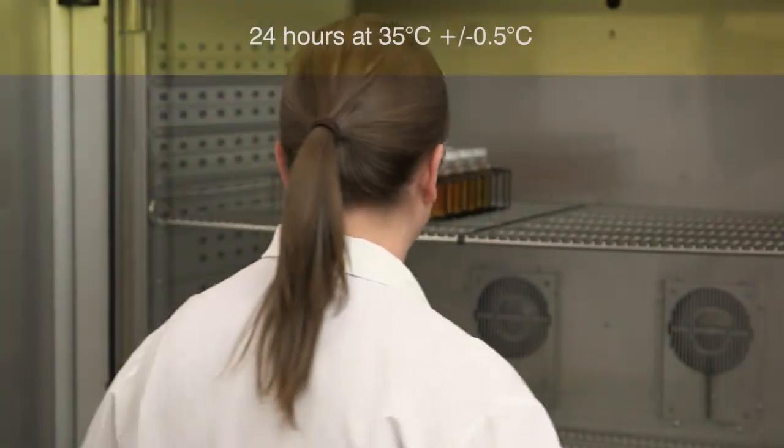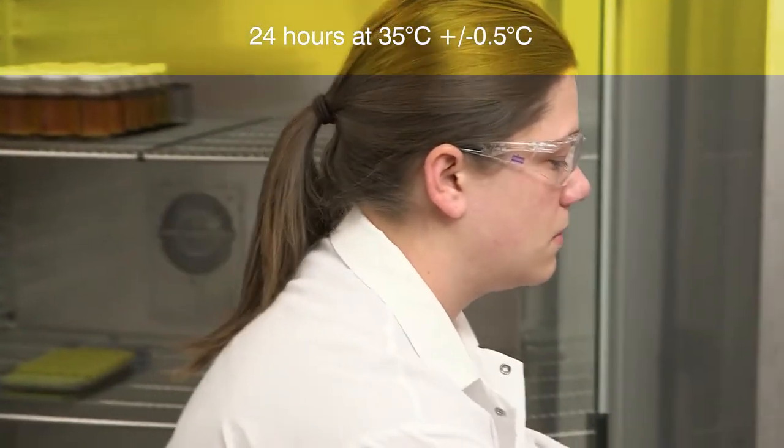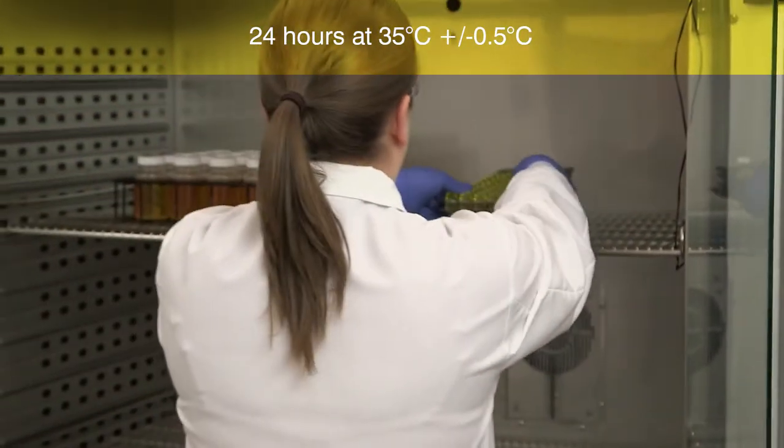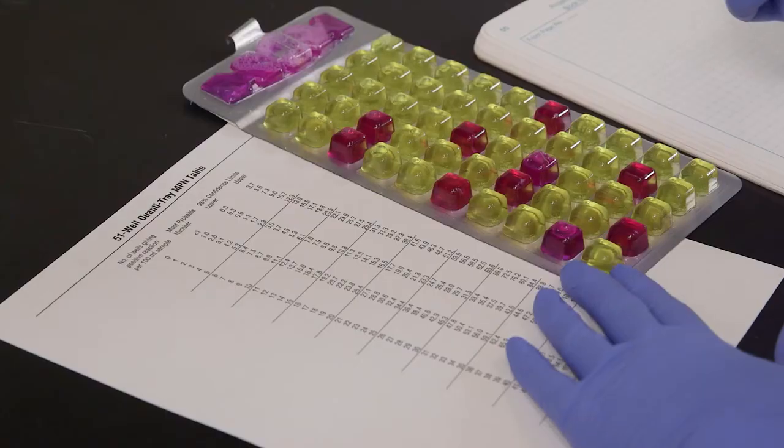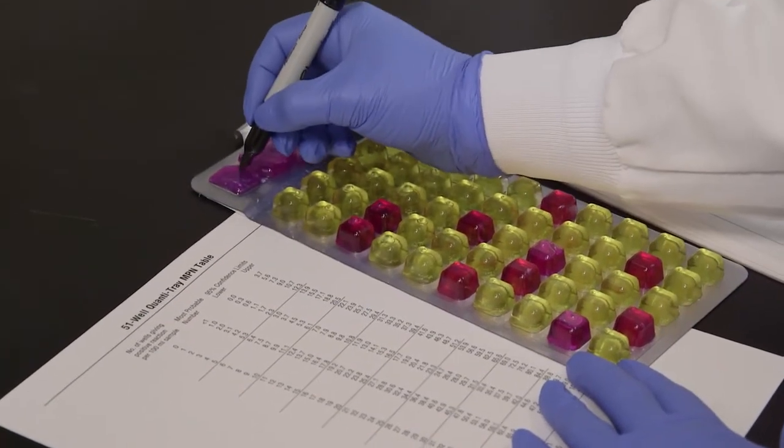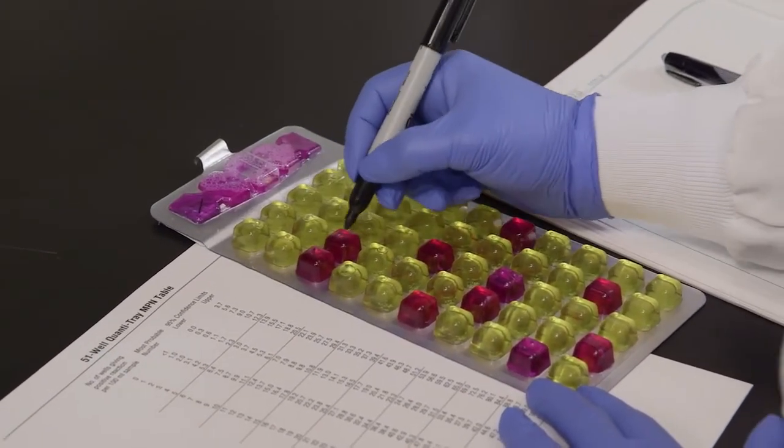Incubate the sealed tray for 24 hours at 35 degrees centigrade, plus or minus 0.5 degrees centigrade, or according to your local regulations. After incubation, mark each red or magenta well with a permanent marker, including the large overflow well.